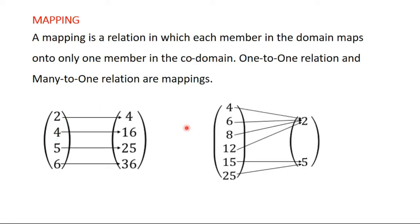In the same way, if you have a many-to-one relation, each member in the domain maps onto only one image. For example, six has only one image which is two, eight has only one image which is two, twelve has only one image which is two, fifteen has one image which is five, and twenty-five also has only one image which is five. So all these are examples of what we call a Mapping.